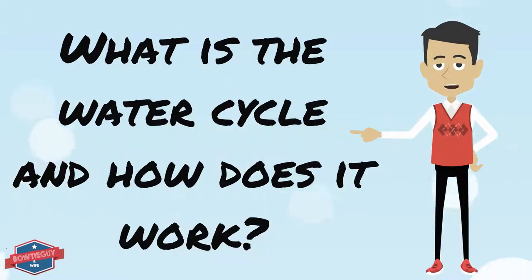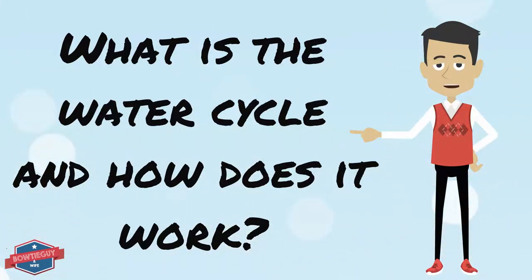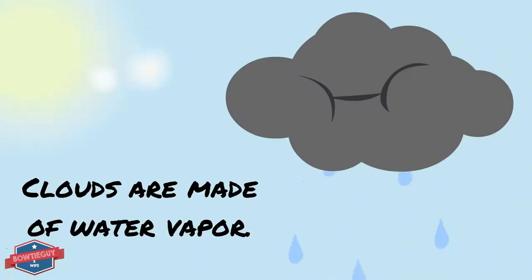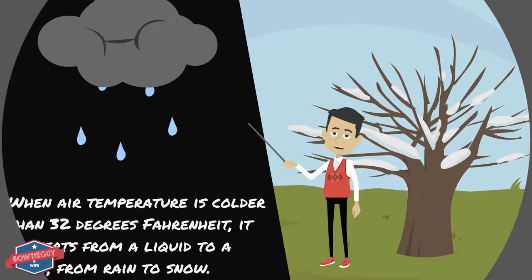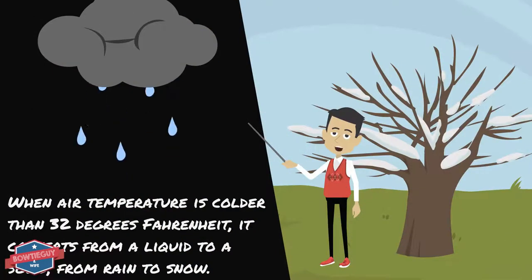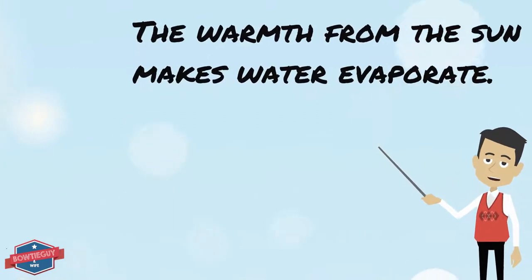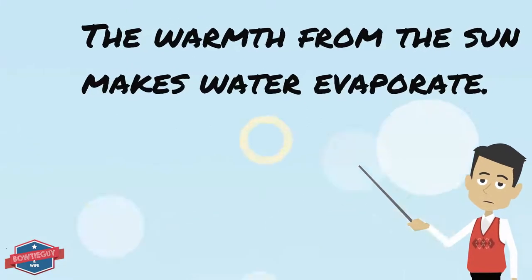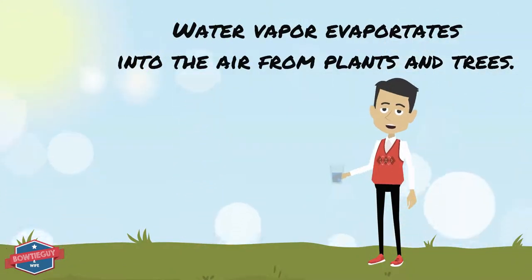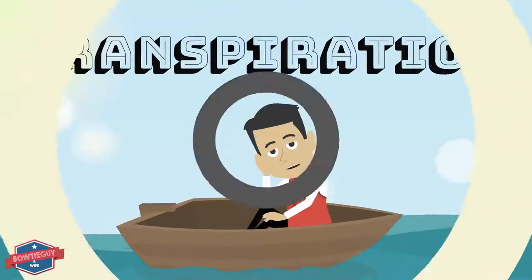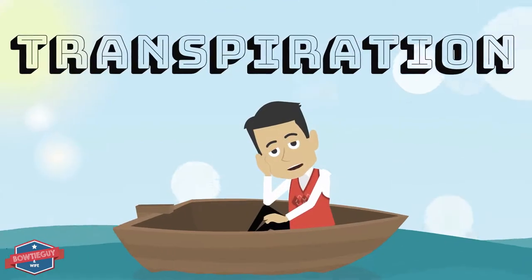Now that we've covered all those vocabulary-specific terms dealing with the water cycle, we can answer the question: what is the water cycle and how does it work? Clouds are made of water vapor. When air temperature is colder than 32 degrees Fahrenheit, it converts from a liquid to a solid, from rain to snow. The warmth from the sun makes water evaporate. Water evaporates into the air from plants and trees — this process is known as transpiration.